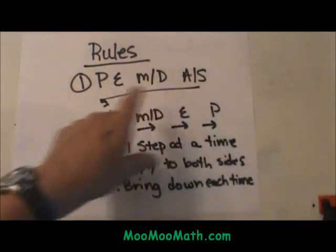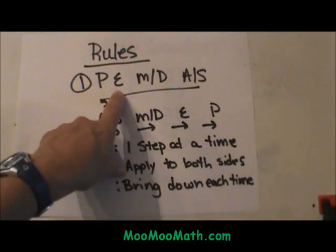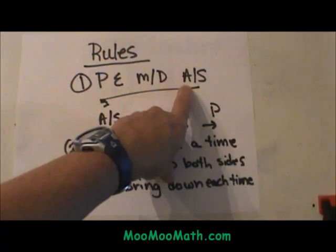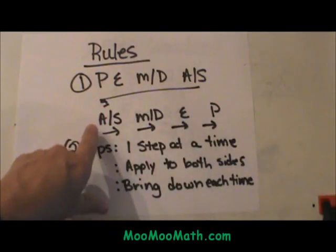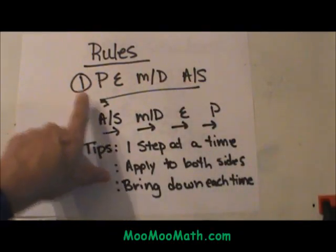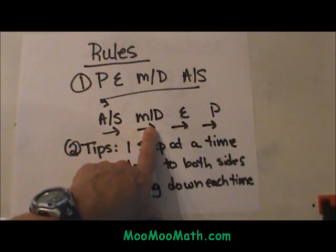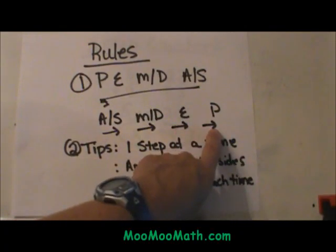Please excuse my dear aunt Sally, or parenthesis, exponents, multiplication and division, addition and subtraction. To solve a two step equation you are actually going to undo the order of operations, so you actually work this backwards. You add and subtract first, then you multiply and divide, then you work any exponents and then parenthesis.